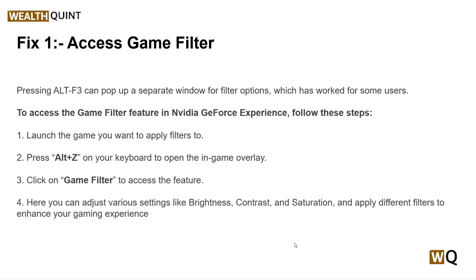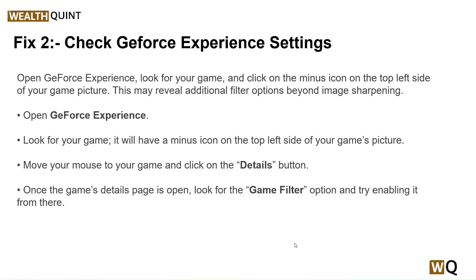To access the game filter feature in NVIDIA GeForce Experience, follow these steps: first, launch the game you want to apply a filter to. Then press Alt+Z on your keyboard to open the in-game overlay. After that, click on Game Filter to access the feature, where you can adjust various settings like brightness, contrast, and saturation, and apply different filters to enhance your gaming experience.